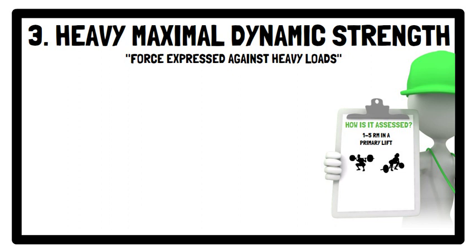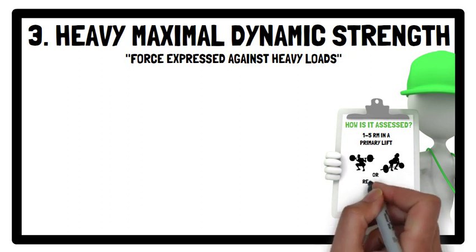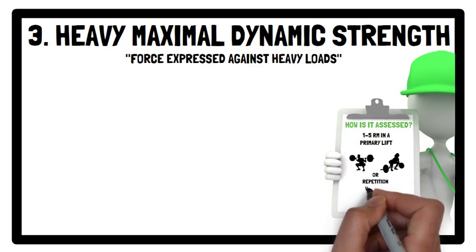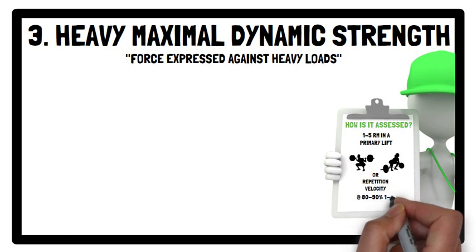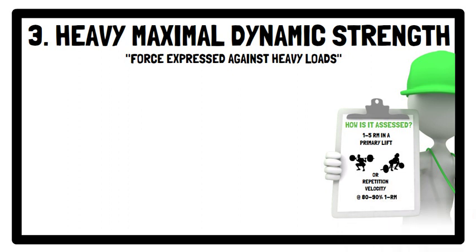advances in technology — for example, force platforms and linear position transducers — have permitted objective outcome measures such as vertical velocity and peak vertical force to be measured that represent dynamic strength under heavy loads. Therefore, heavy maximal dynamic strength can also be assessed via the repetition velocity of a heavy but sub-maximal load, ranging between 80–90% of 1RM, in a primary lift.